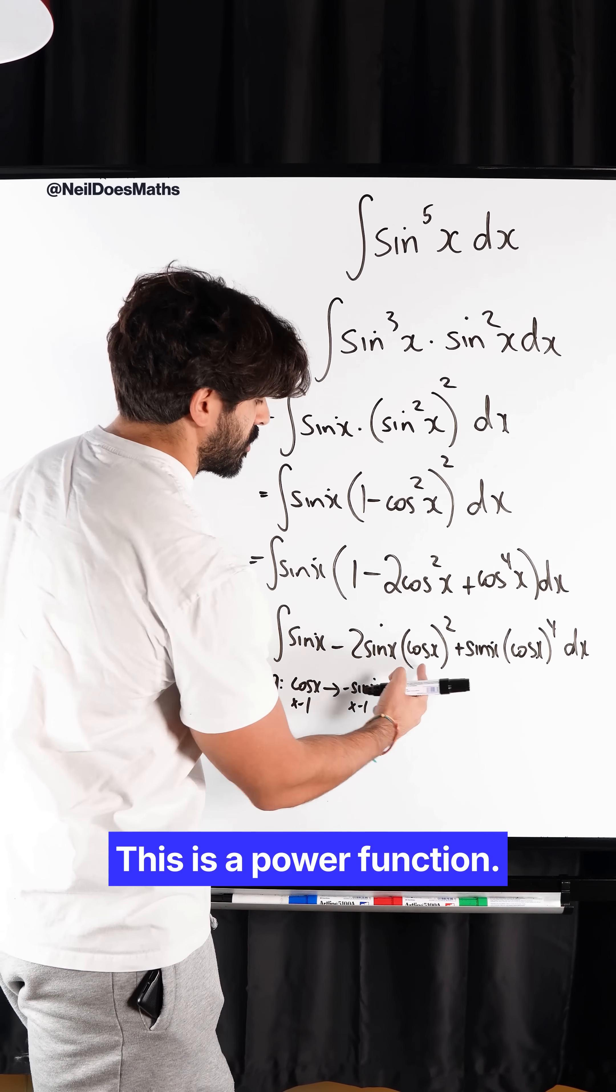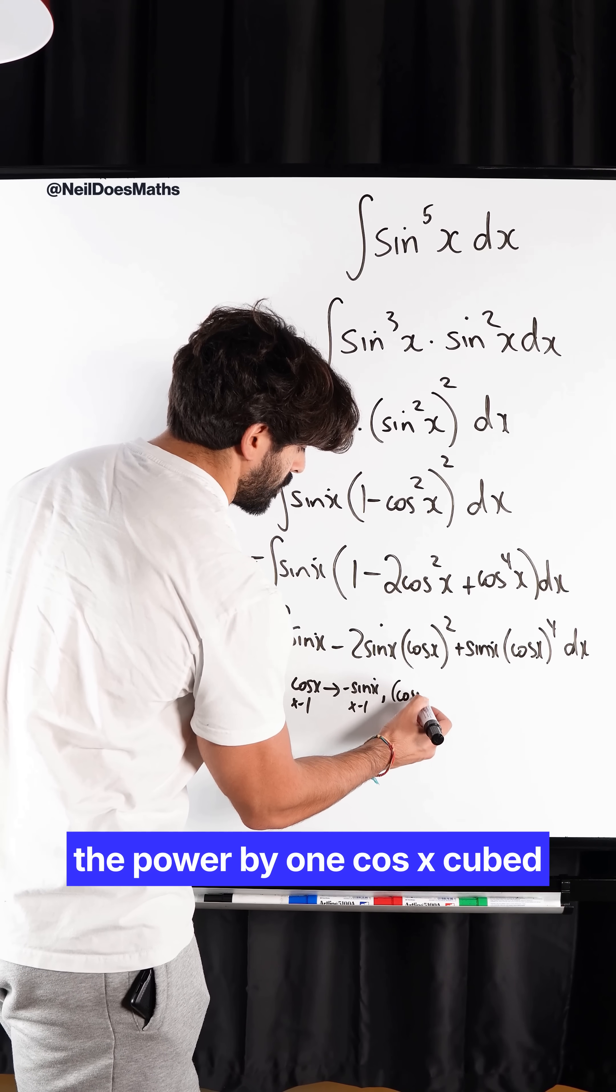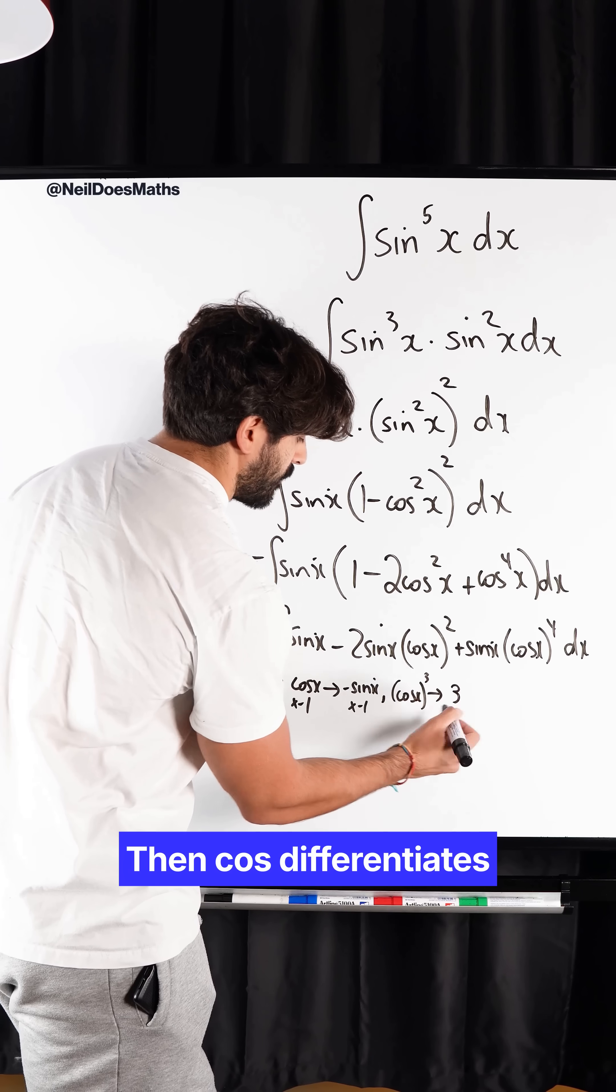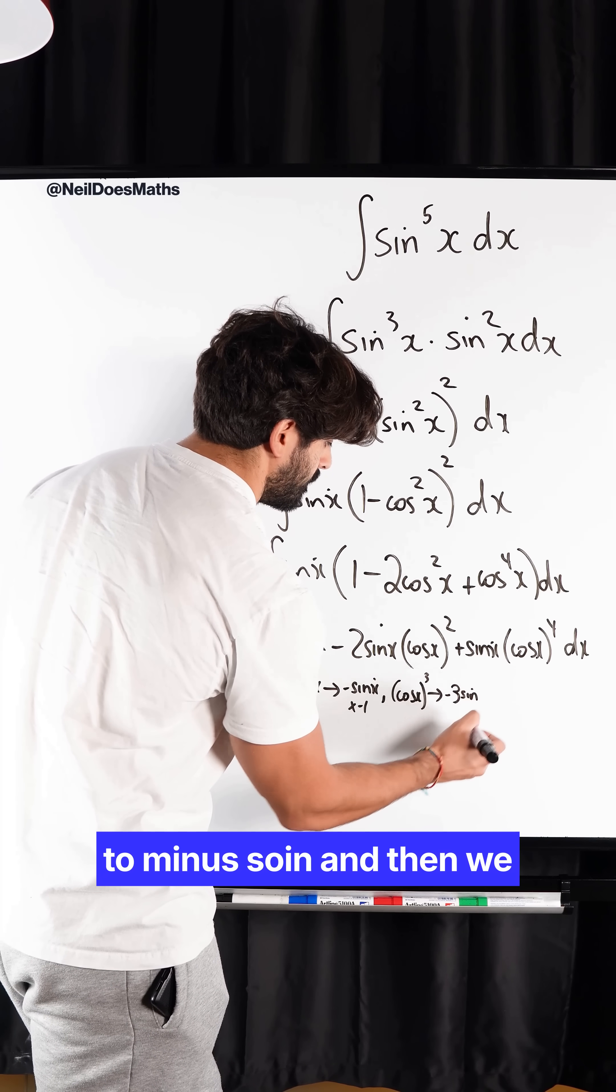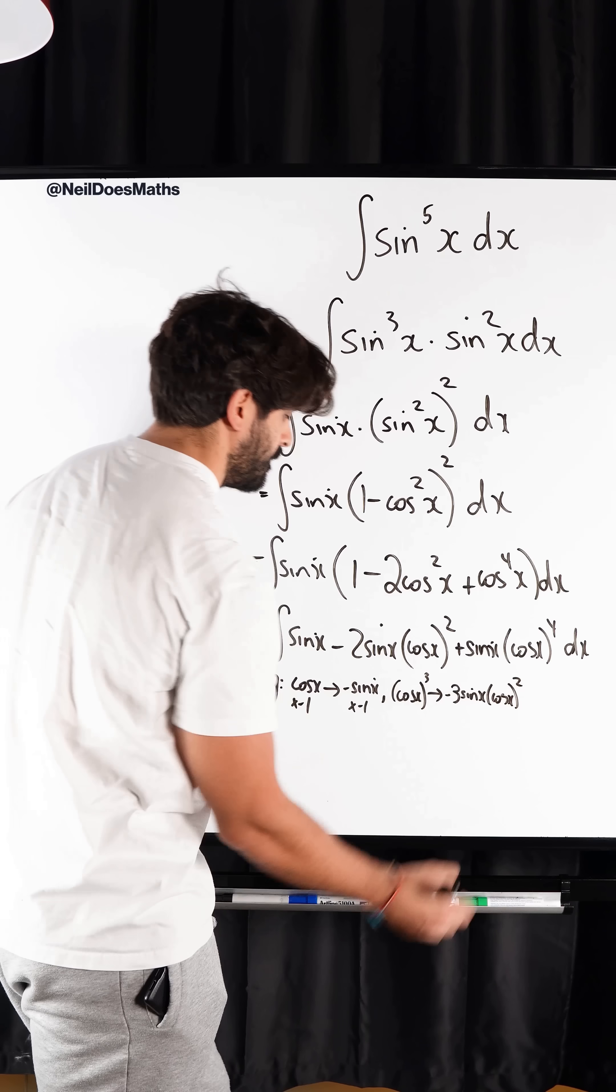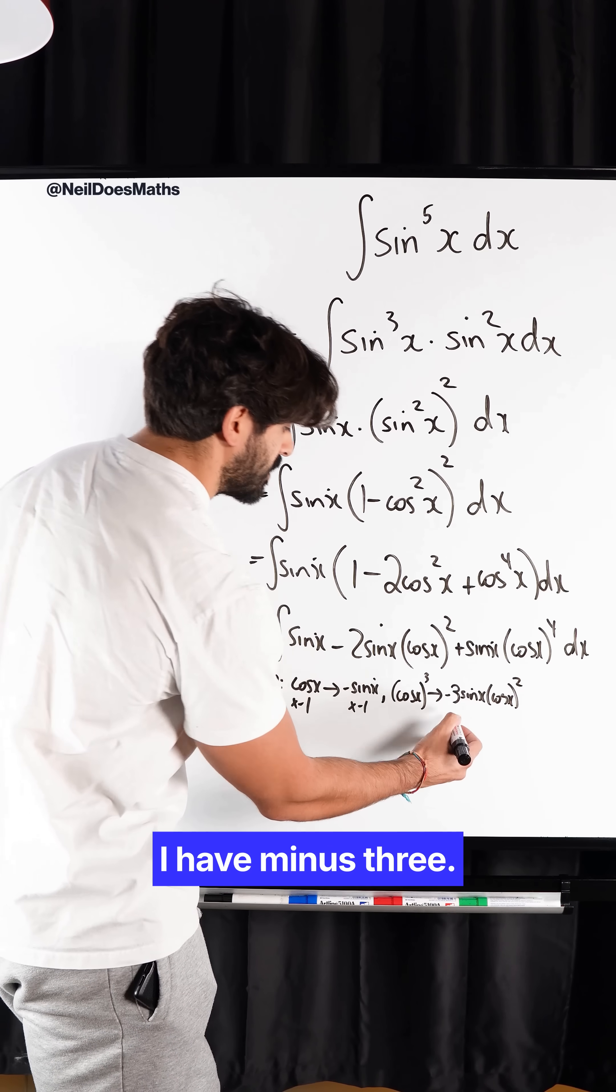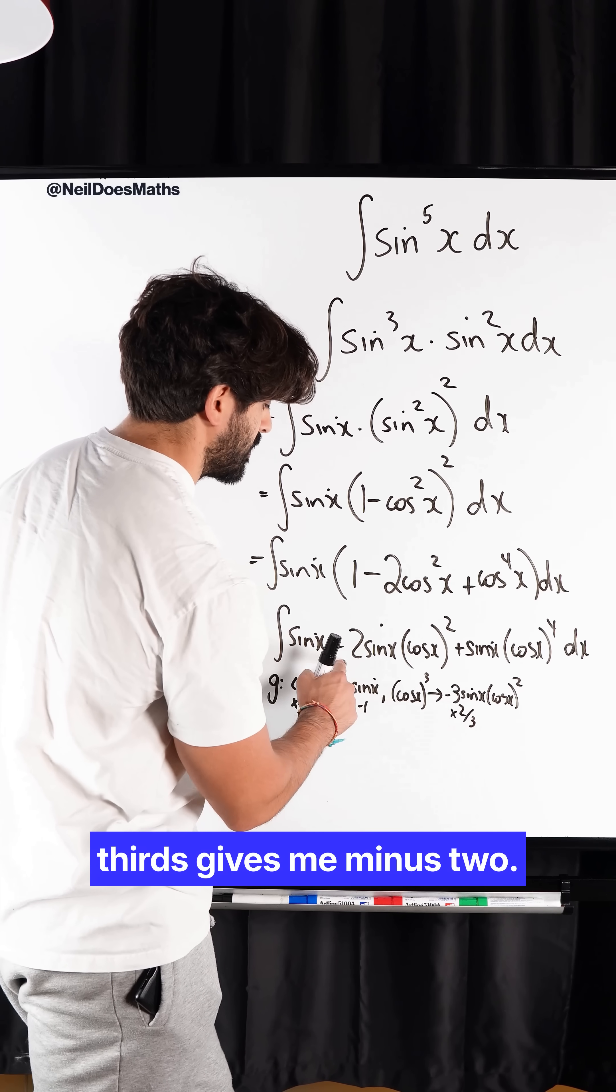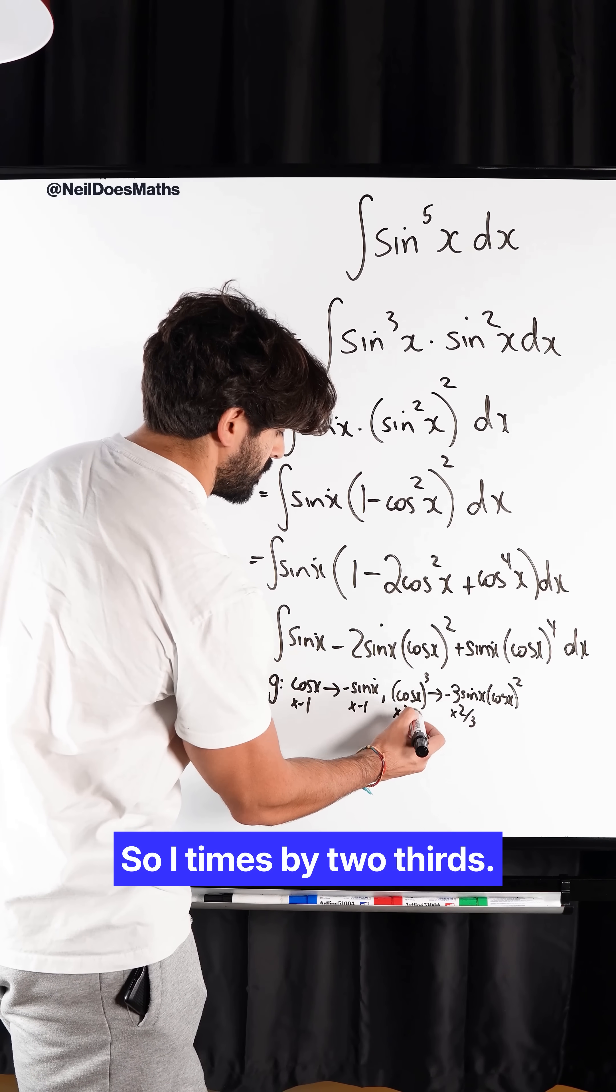For this one, this is a power function. So I'm going to raise the power by 1. Cos x cubed. Differentiate that. So you bring down the 3. Then cos differentiates to minus sin. And then we knock one off the power. We get cos x squared. But we wanted minus 2. I have minus 3. So I have to times that by 2 thirds. Minus 3 times 2 thirds gives me minus 2. So I times by 2 thirds.